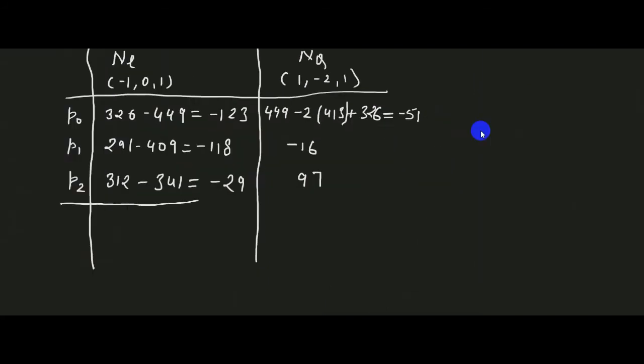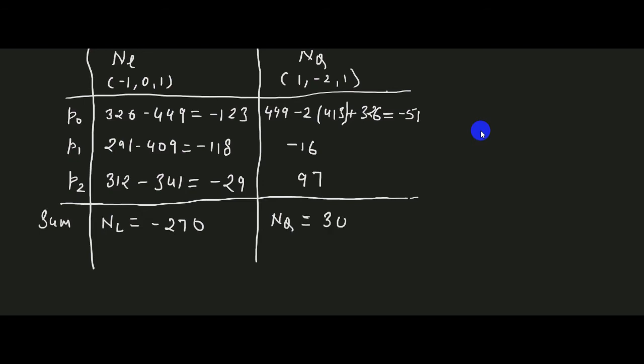If we add all the linear effects of nitrogen together and all the quadratic effects together, we get the overall linear effect of nitrogen NL and the quadratic effect of nitrogen NQ. Similarly, we find the quadratic effect of phosphorus at all three levels of nitrogen, denoted N0, N1, and N2.